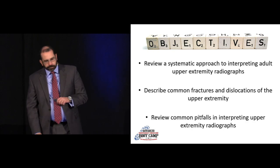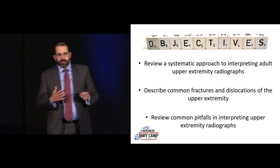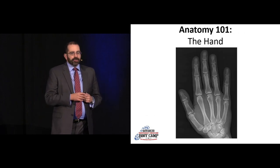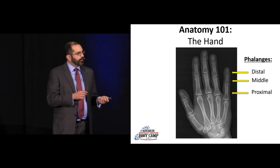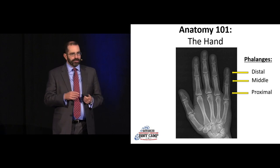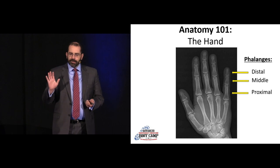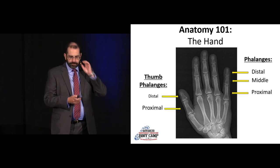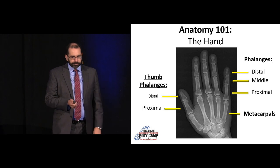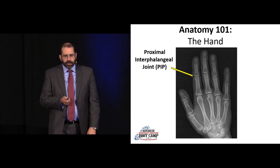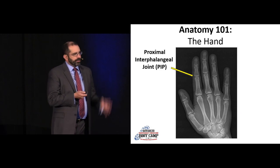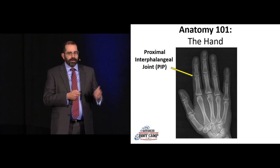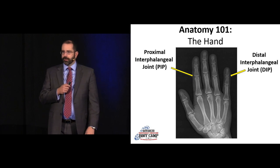Starting with anatomy, because it's always good to brush up on it. Starting with the hand: just like in the foot, we have proximal, middle, and distal phalanges in the fingers. In the thumb, it's a little different — we just have a distal and proximal phalange. You have your metacarpals. In terms of joints, the fingers have a proximal interphalangeal joint (PIP) and a distal interphalangeal joint (DIP).